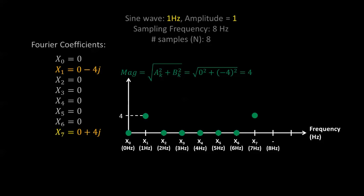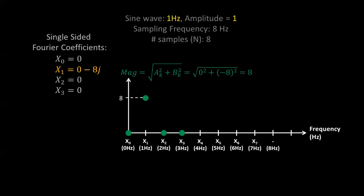But why is there also a value at the 7 Hz bin? This is a two-sided frequency plot. It's impossible to measure frequencies above the Nyquist limit — the sampling frequency divided by 2 — so we discard all values above the Nyquist limit and double the remaining values below it. In our case we get a magnitude of 8. However, 8 still isn't equal to 1 — the expected amplitude — because we used 8 samples, so we divide by 8 to average and recover amplitude = 1.